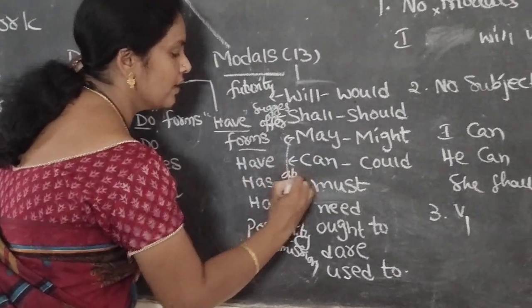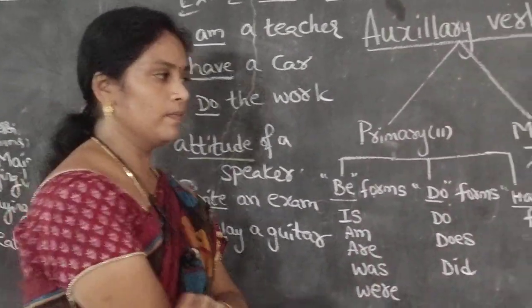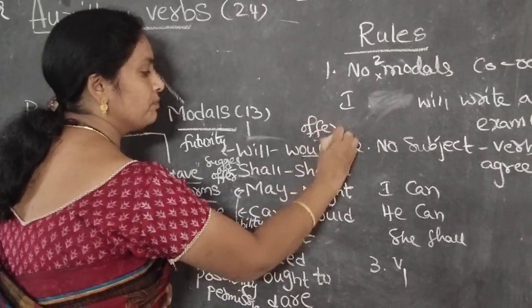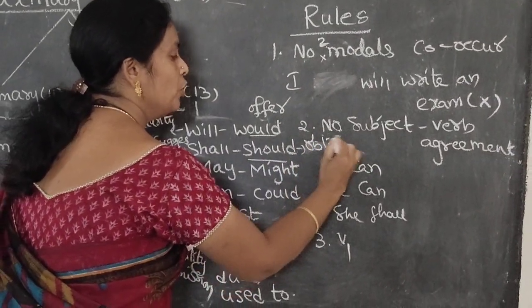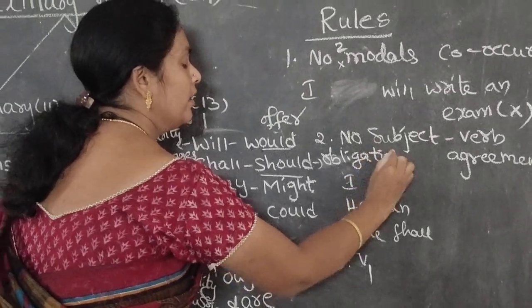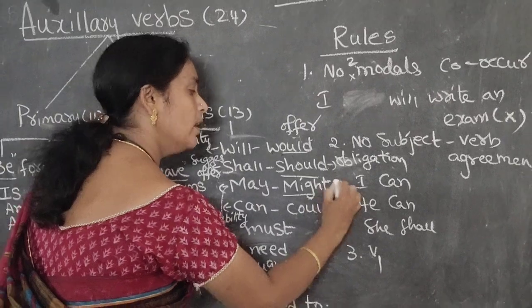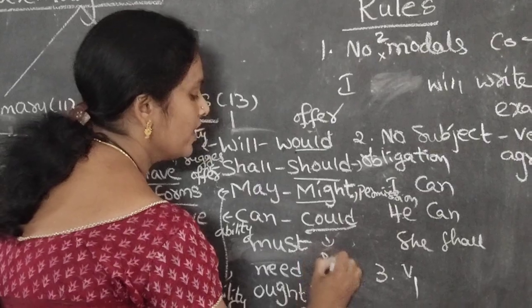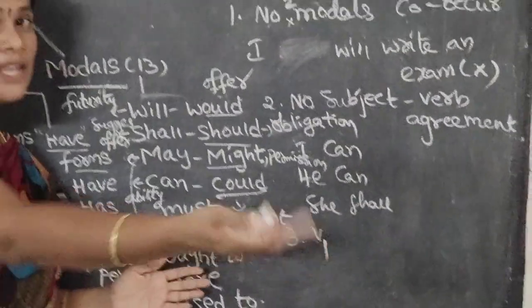Can is used for ability. I can play guitar — that means I have the ability to play the guitar. Would is also for offer. Should is for obligation — when you want to put a requirement on someone, you use should. Might is for permission, same as may. Could is for request — if you want to take something from your friend, you ask: could you please give me that one?